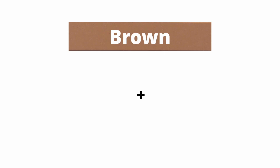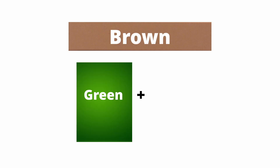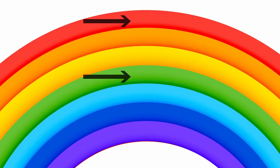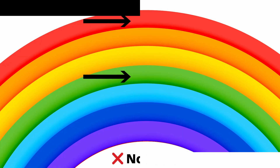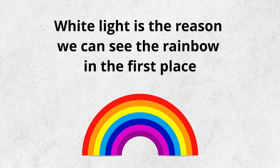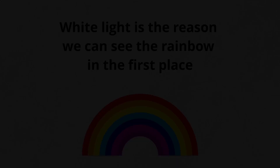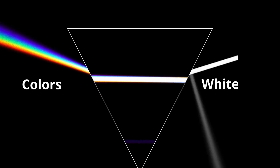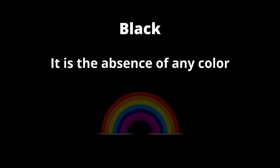As for the color brown, which is a mix of green and red, those bands are not in contact with each other in the rainbow, so there's no brown band. What about black and white? White light is the reason we can see the rainbow in the first place — the colors we are seeing are coming from this white light. Black, on the other hand, is the absence of any color, and since we're talking about a rainbow, a lack of black makes sense.